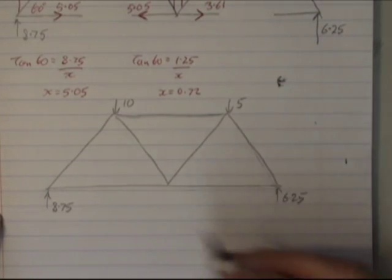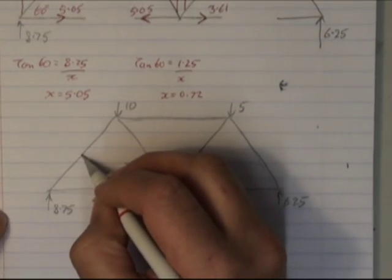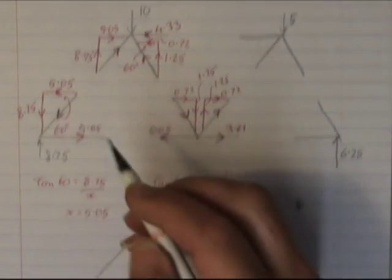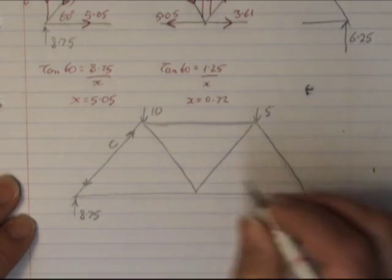To get our final values, we now just simply need to work out the total force in these members. So this member here was this one. It is arrows going down at this end. So down that end, up that end. So it is in compression.